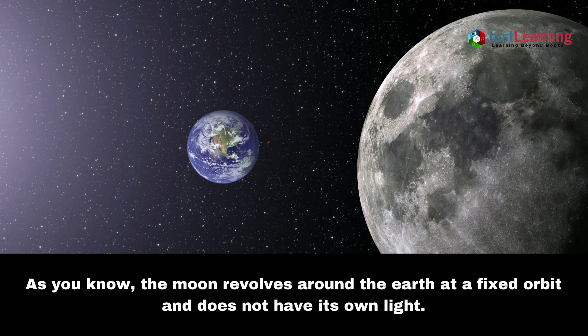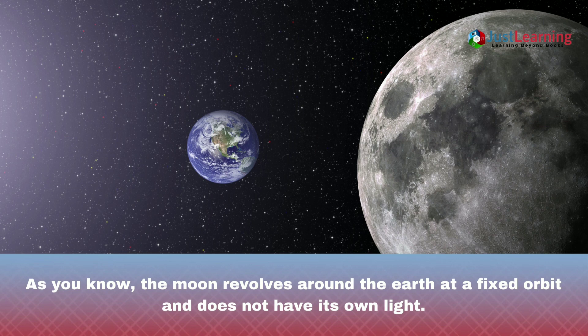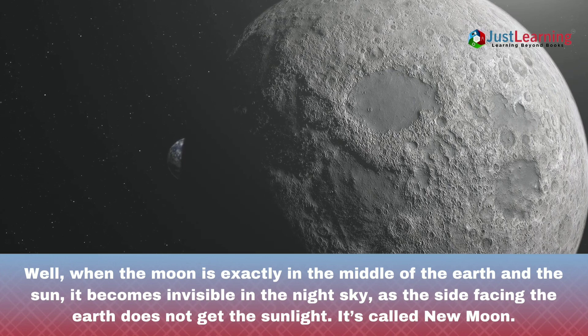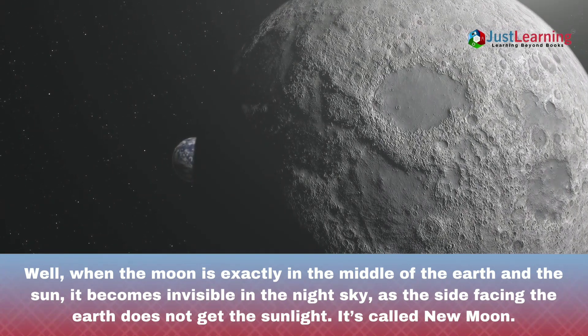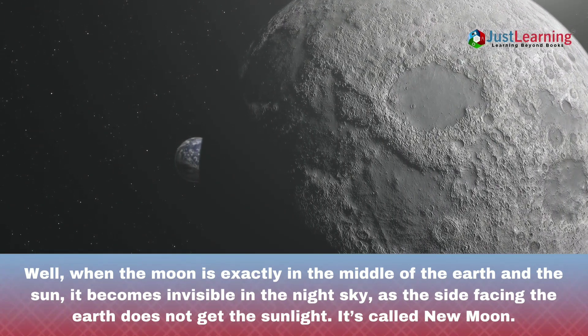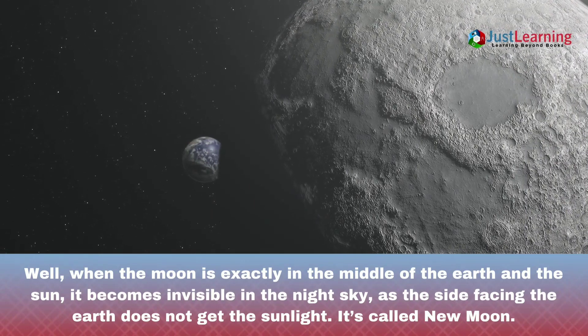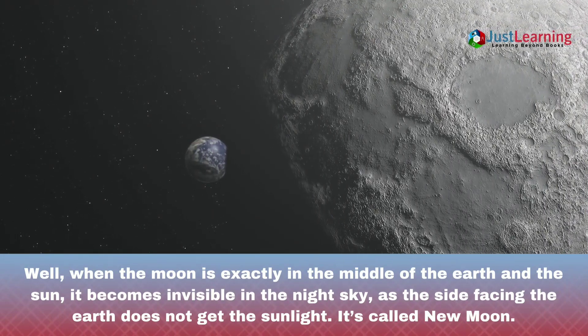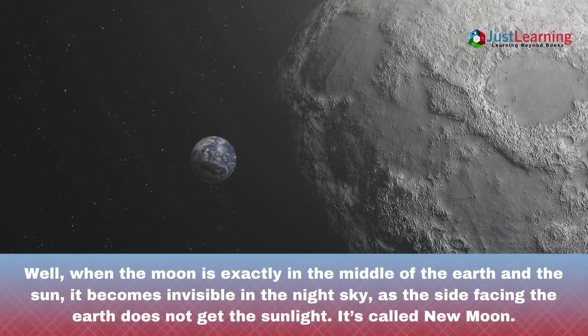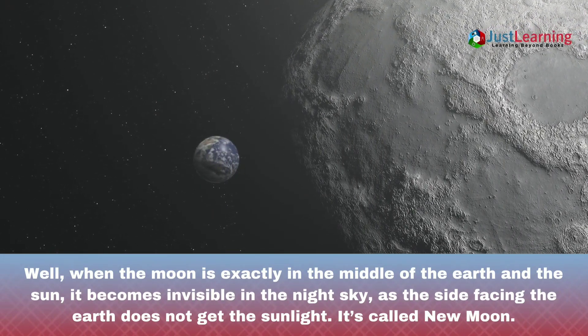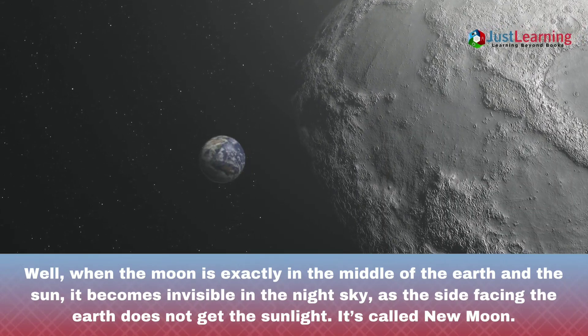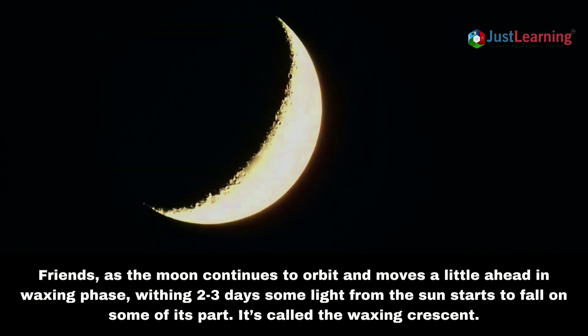As you know, the moon revolves around the earth at a fixed orbit and does not have light on its own. When the moon is exactly in the middle of the earth and the sun, it becomes invisible in the night sky as the side facing the earth does not get the sunlight. This is called the new moon.